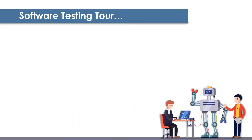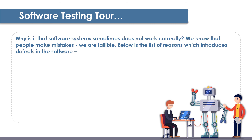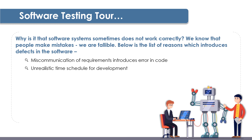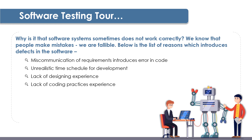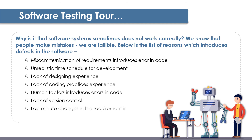Let's give you a walkthrough on why sometimes software doesn't work correctly. There are many reasons which introduce defects in software — for example, miscommunication of requirements which introduces errors in code, unrealistic time schedules for development, lack of design experience, lack of coding practices experience, human factors, lack of version control, last-minute changes in requirements, poor software testing skills where the tester has missed out important requirements to test, and many other reasons which introduce bugs in the software.